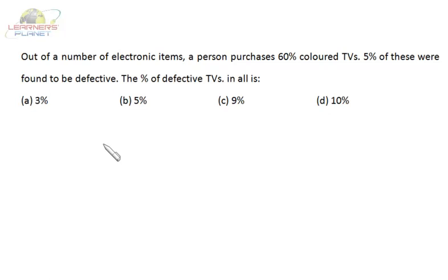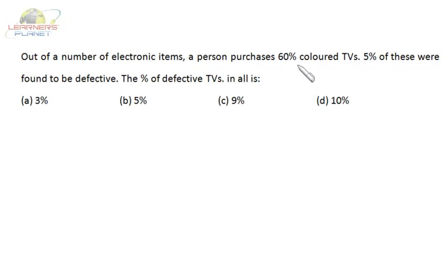Now let's see this question: out of a number of electronic items, a person purchases 60% colored TVs. 5% of these were found to be defective. What is the percentage of defective TVs in all? Suppose he is purchasing 100 items — 60 are colored TVs. 5% of 60 is 3. So the answer is 3%.